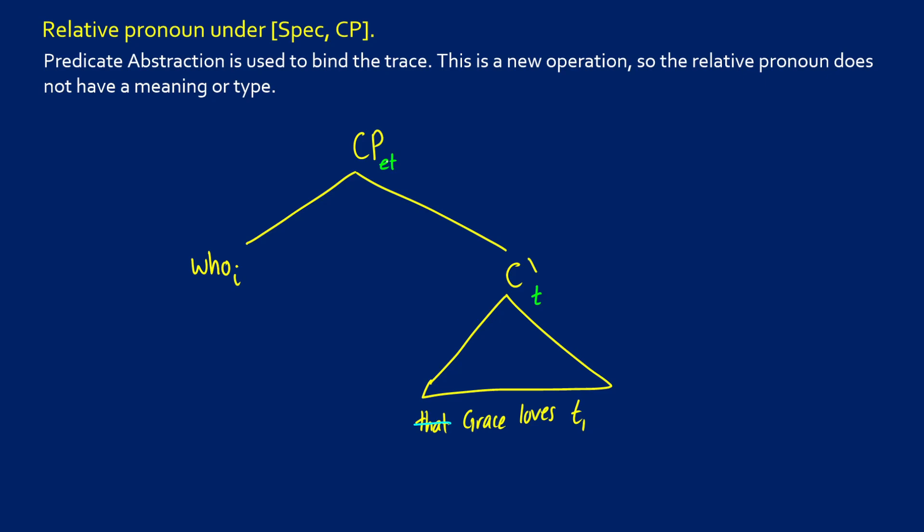Because if we think about this, we would want something like lambda X1 dot G loves X1. Because when we say "man who Grace loves," we want "X1 is a man and G loves X1." That's how our predicate modification is going to work.